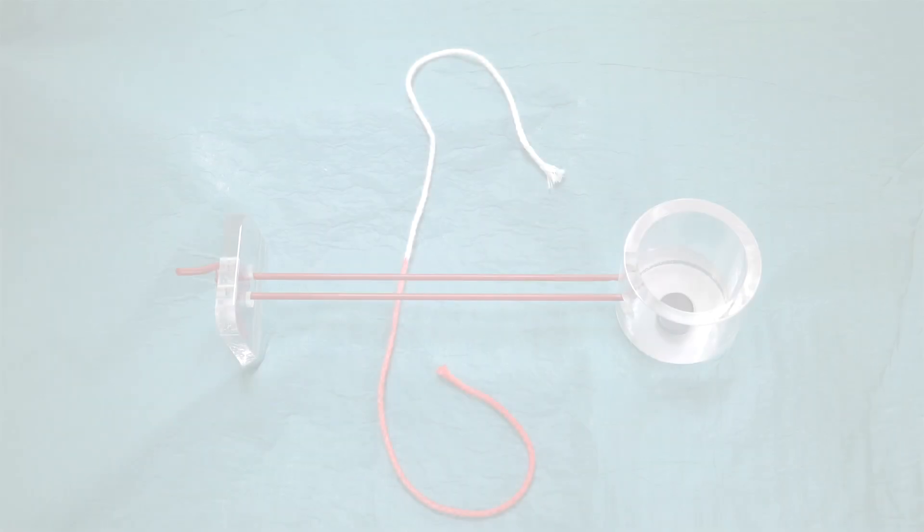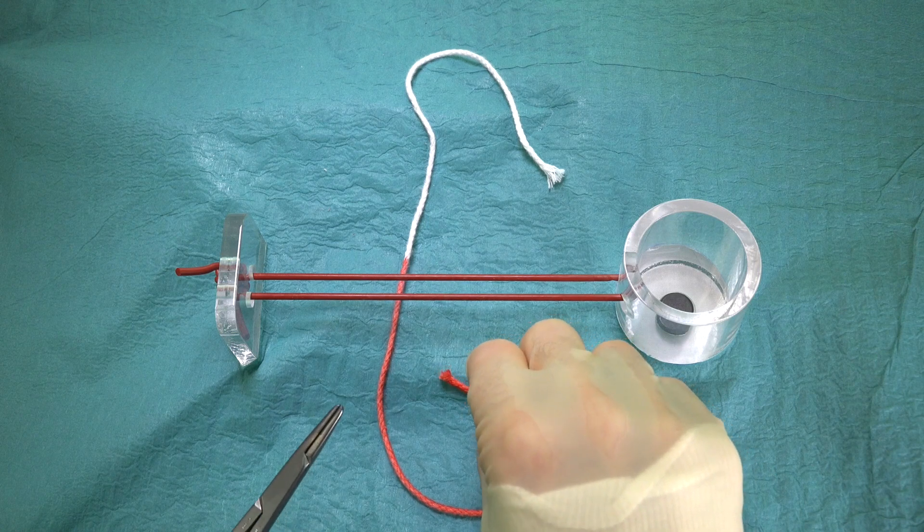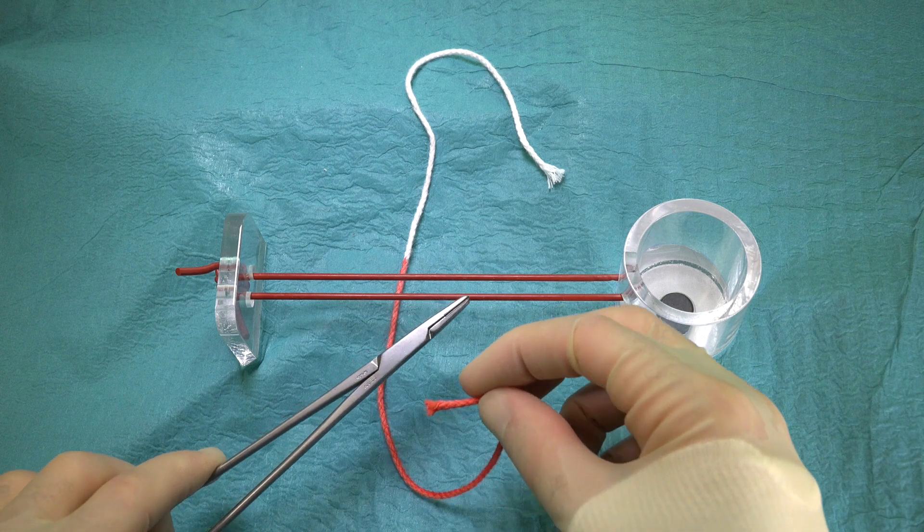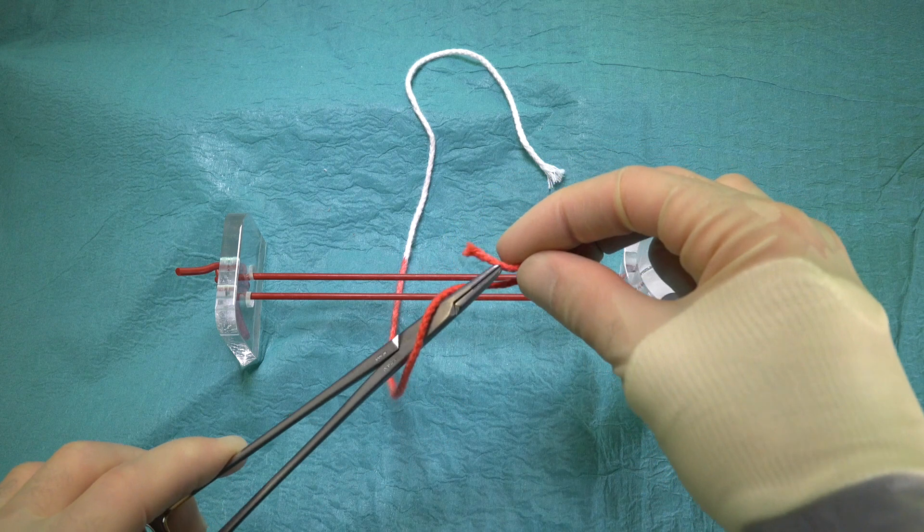We start by holding the end of the suture closest to us in our right hand. The needle holder in our left hand is held out horizontally, lying over the suture. The right hand then loops the suture over the instrument twice to form two loops.